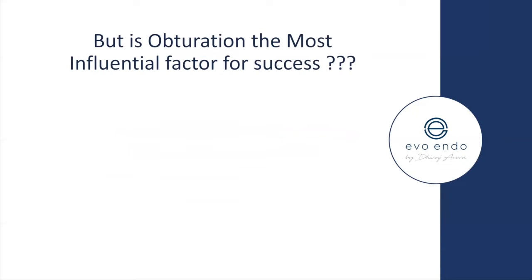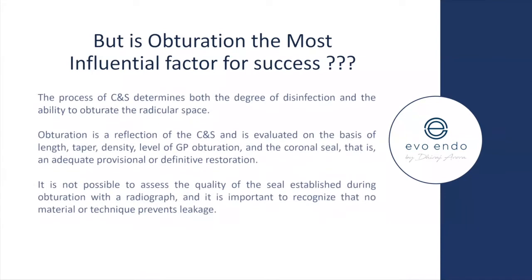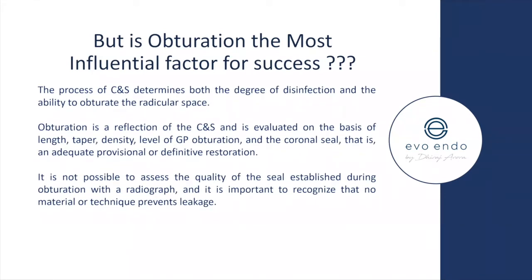Is obturation the most influential factor for success? Cleaning and shaping determines the first degree of disinfection and the ability to obturate the radicular space. Obturation is actually only a reflection of the cleaning and shaping, and is evaluated on the basis of length, taper, density, level of obturation, and subsequent coronal seal. It is not possible to assess the quality of the seal with a radiograph alone, and no material or technique fully prevents leakage. It's more what you take out rather than what you put in that determines long-term success.